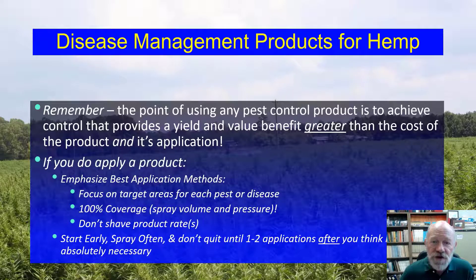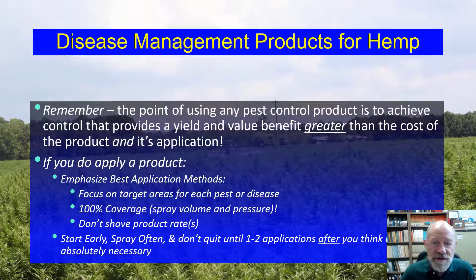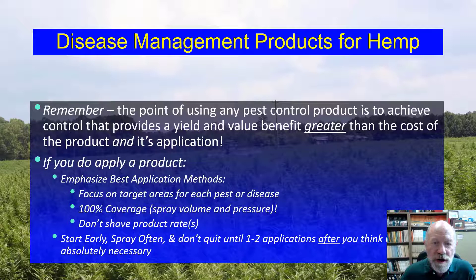If you choose to use something to prevent or control a hemp disease, be sure that you believe it may benefit you more than it will cost you. Think about how best to apply the product, focusing the application on the parts of the plants where the pathogen or pest is likely to be, using spray volumes and pressures that will give you 100% coverage, and use the product rate listed on its label. Don't cut the rate.